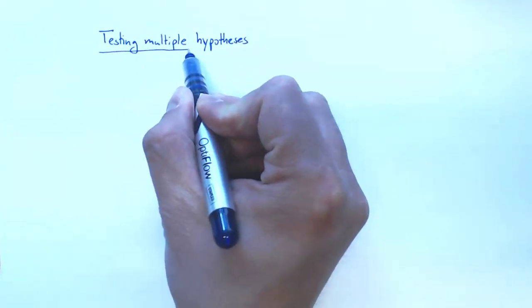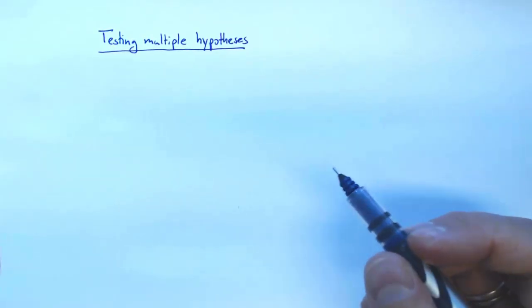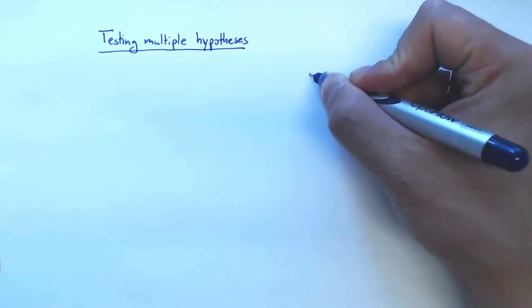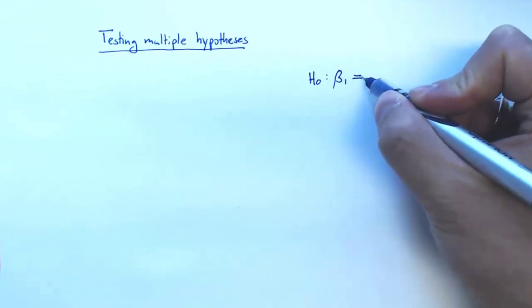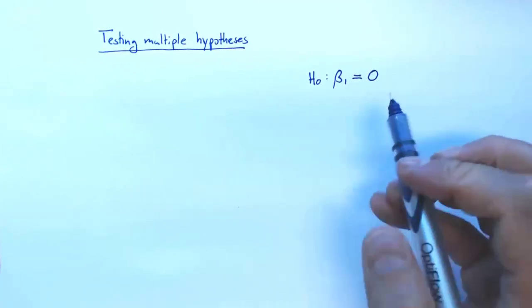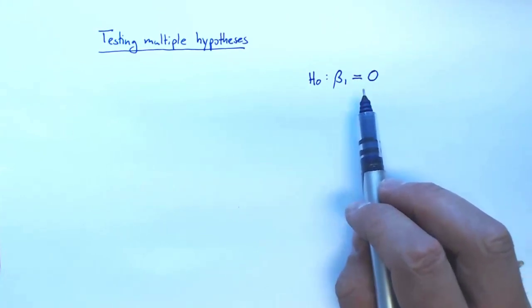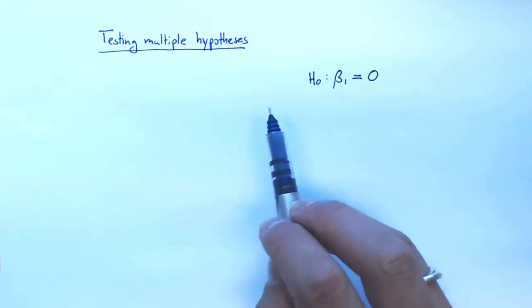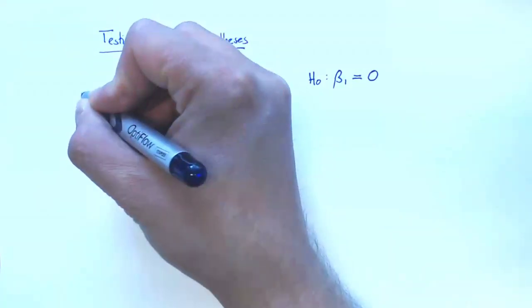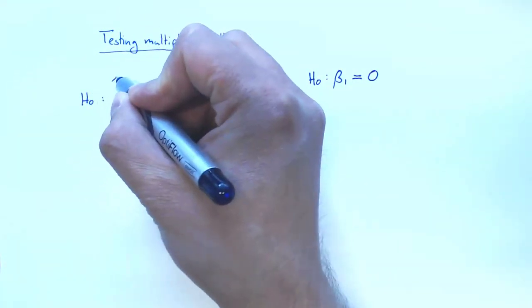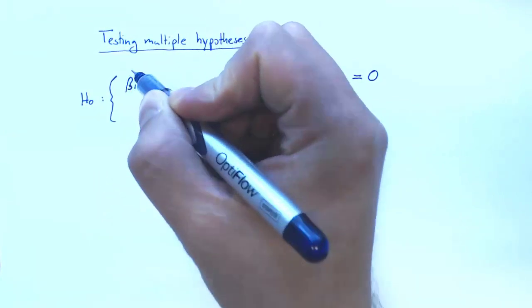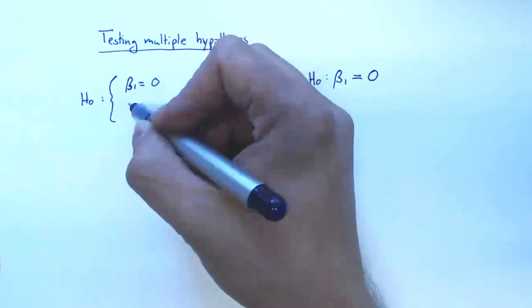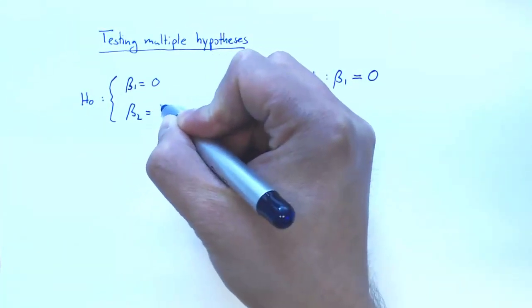In this video I'm going to talk about testing multiple hypotheses. What we looked at before were hypotheses that restrict one coefficient — for example, beta 1 — to equal some number. When we test significance we test beta 1 against 0. Now we want to look at a null hypothesis where beta 1 equals 0 and in addition beta 2 also equals 0.